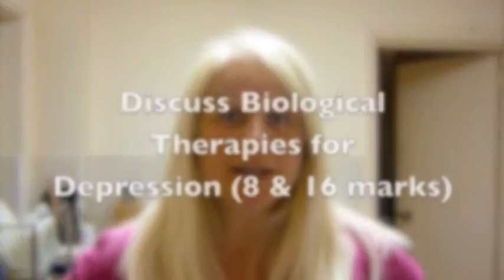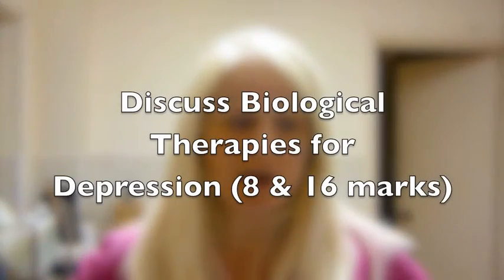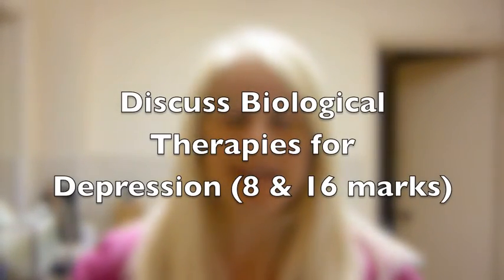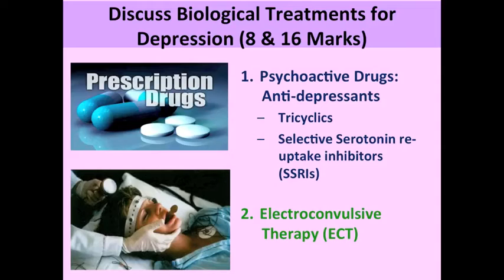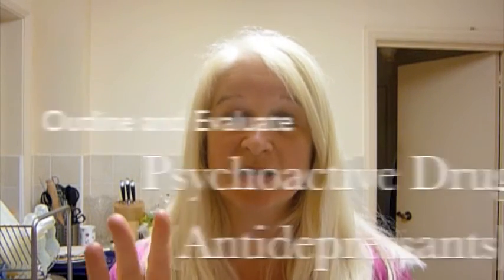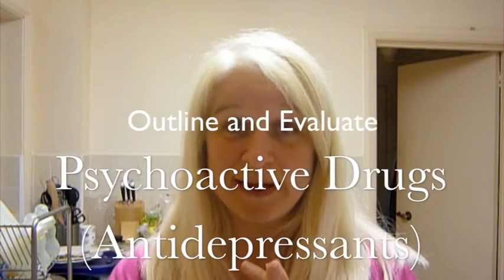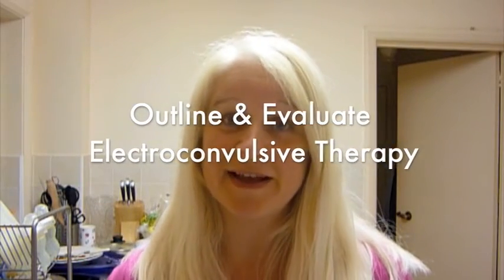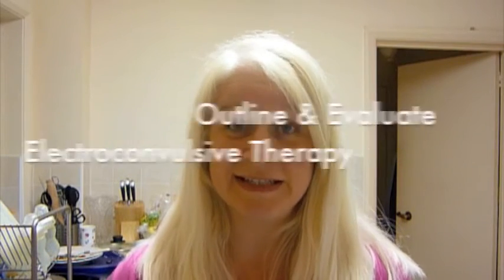The exam might say: discuss biological treatments for depression, 8 and 16 marks. If they do this, they're asking for two things: psychiatric drugs, antidepressants, and ECT. I would split the essay into two separate sections. The first section, I would outline and then evaluate the antidepressant drugs, and then for the second part of the essay, I would outline and evaluate ECT.